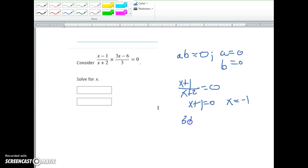In the other case, (3x-6)/3 has to equal 0. We could factor 3 out of the top. Right now, it's easier if we just set the numerator equal to 0. If I add 6 to both sides, I get 3x equals 6. Divide both sides by 3, and I get x equals 2.